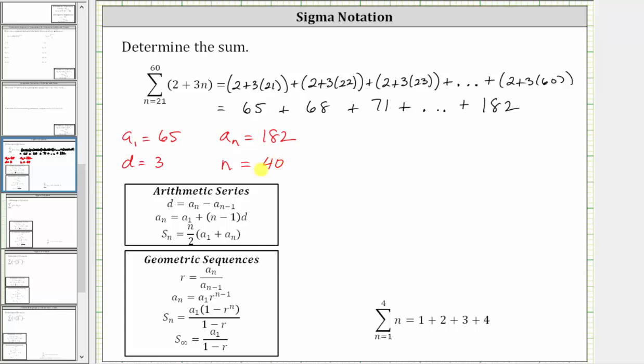To better understand this let's look at a simpler example. Let's say we have the sum from n equals one to four of n. If we expand this we have one plus two plus three plus four. We can easily see we have four terms but if we take the upper limit and subtract the lower limit we have four minus one which is three. But again we have four terms so we do have to add one to get the correct number of terms.